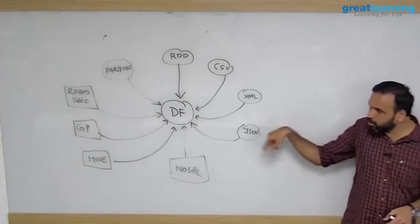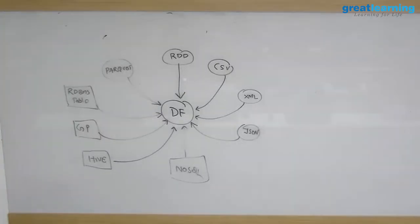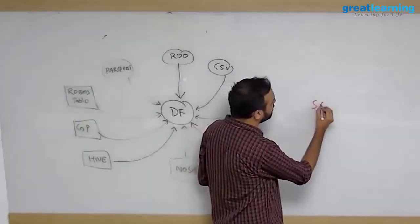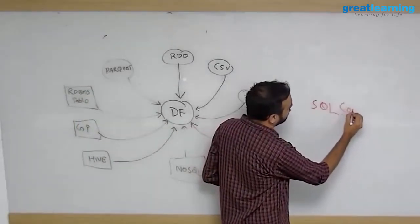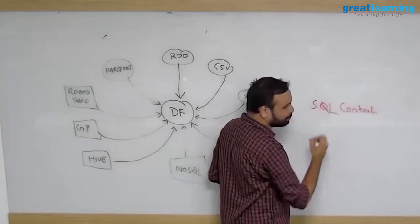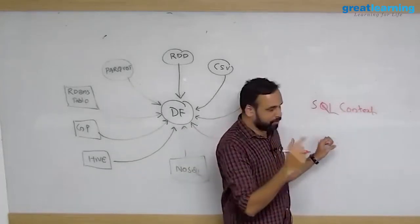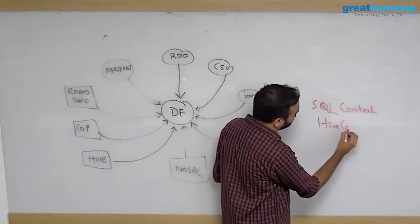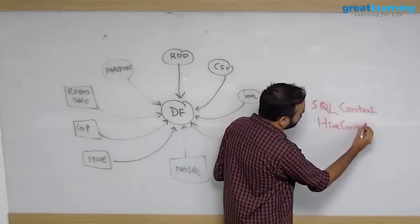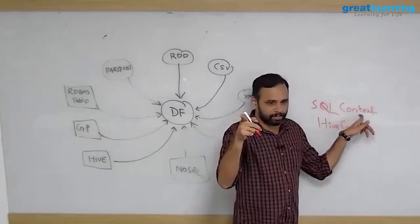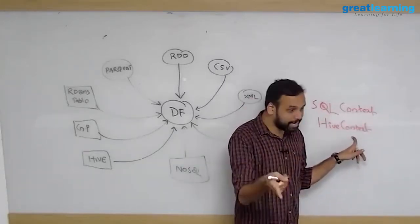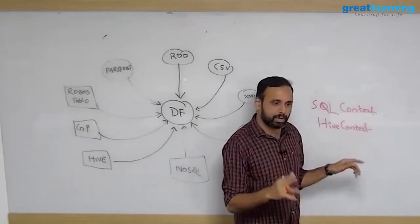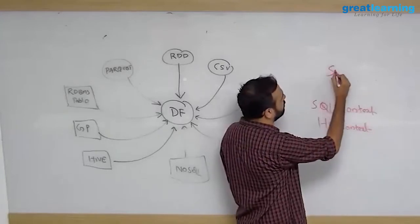So once you know this, the rest of the story is very easy. In Spark version 1, we had an object called SQL context object. In Spark version 1, we also had another object called Hive context. So this guy was used to talk to SQL, this guy was used to talk to Hive from Spark.